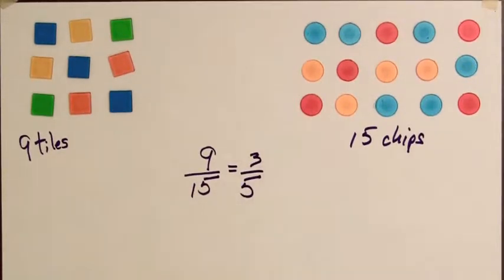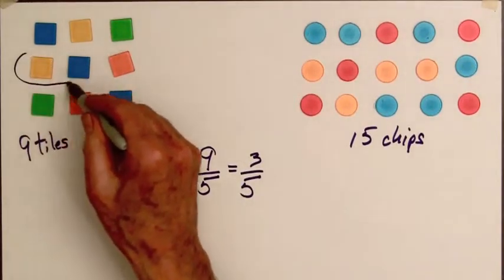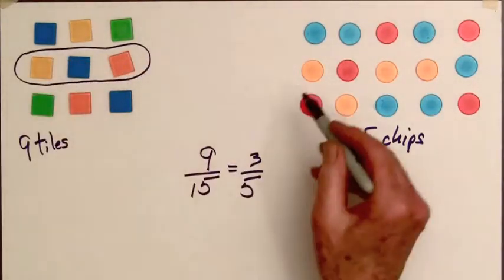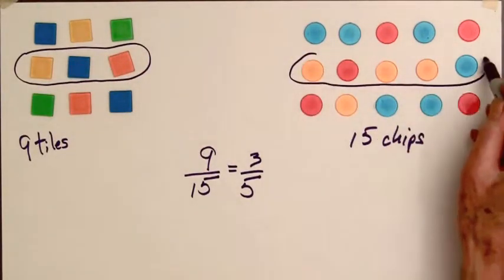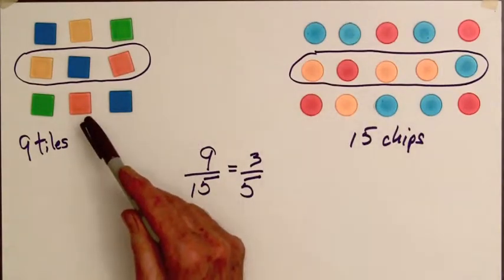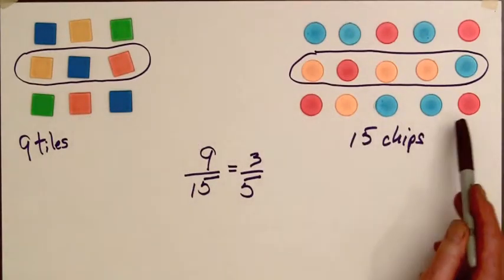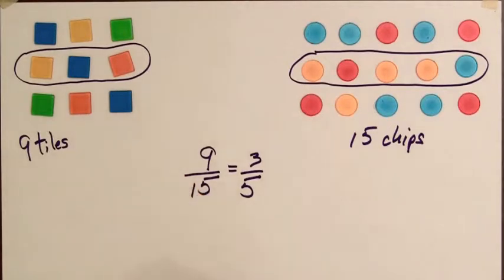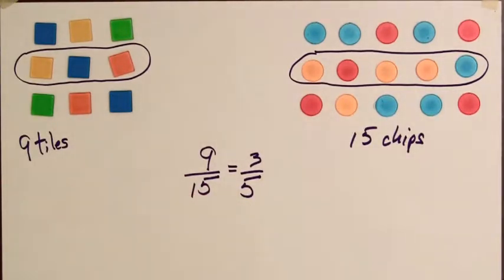This lowest terms tells us that for every 3 tiles there are 5 chips. If we compare the number of chips to the number of tiles, for every 5 chips there are 3 tiles, so the ratio of chips to tiles is 5 to 3, or 5 thirds.